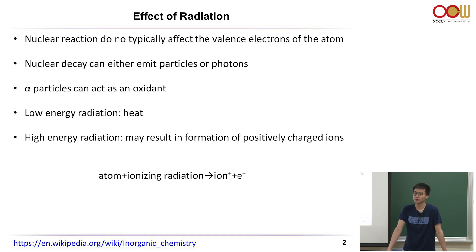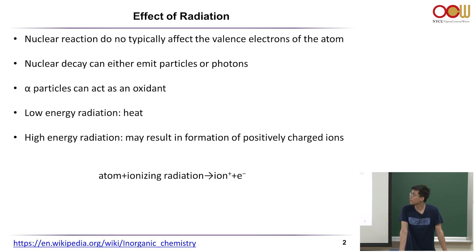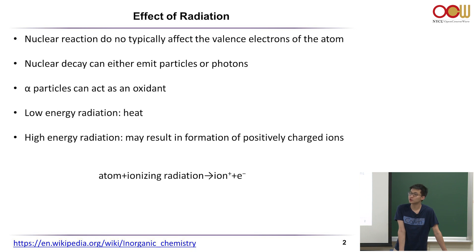About these emitted energies: alpha particles are very high energy substances and can be regarded as oxidants. Based on the equation, alpha particles can be ionizing radiation causing the ejection of electrons. For oxidation reactions, remember what happens to the electrons. For low energy radiation, it's generally in the form of heat, because when this energy is emitted, molecules that collide with it can absorb the energy as heat.